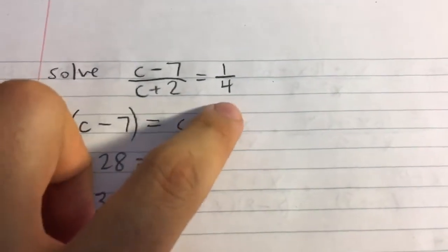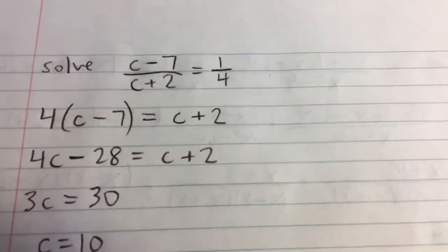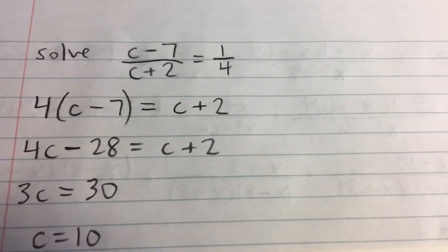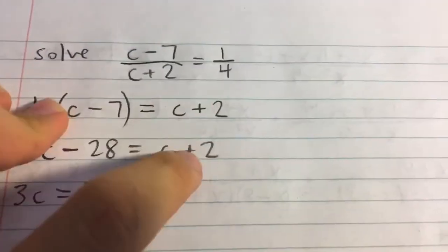On the right, when we multiply by 4, that cancels the denominator. Then we multiply by c plus 2, which gives us c plus 2.